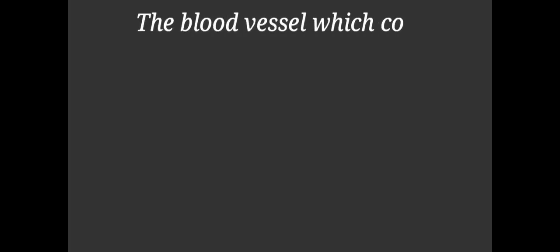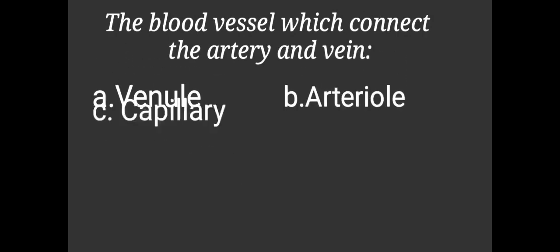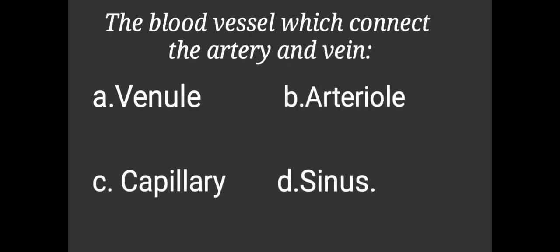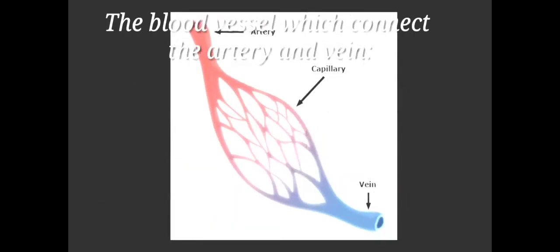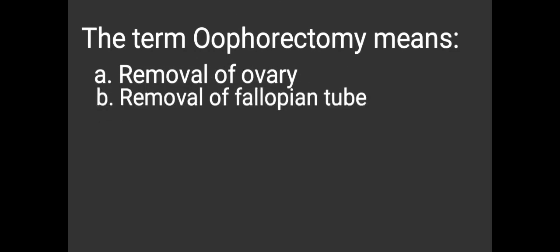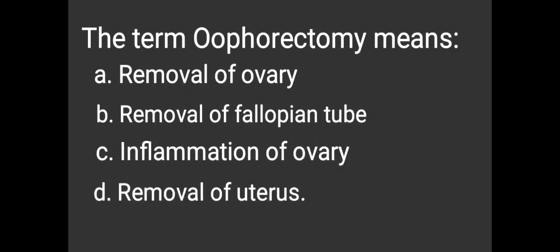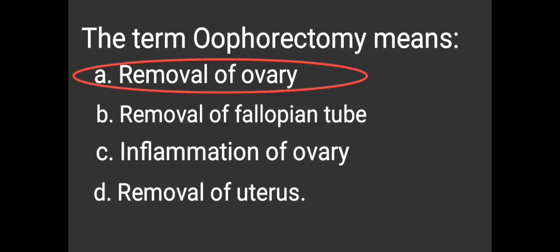The blood vessel which connects the artery and vein is: A. Venule, B. Arteriole, C. Capillary, D. Sinus. The answer is C. Capillary. The term oophorectomy means: A. Removal of ovary, B. Removal of fallopian tube, C. Inflammation of ovary, D. Removal of uterus. The answer is A. Removal of ovary.